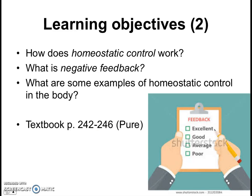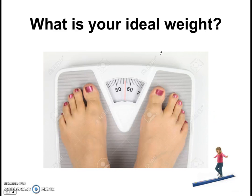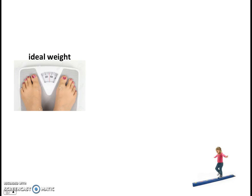To begin exploring how homeostatic control works, I'm going to ask a rather insensitive question: what is your ideal weight? Not many of us like to share such details, but most of us have some idea of what weight we want to be. For me, let's say I would like to maintain my weight at about 60 kilograms — that's my ideal weight. Let's call this ideal weight our set point or norm. It's the point you want to be, the norm you want to maintain.